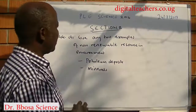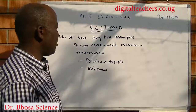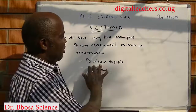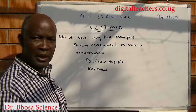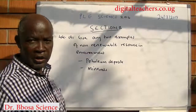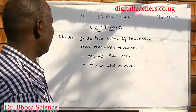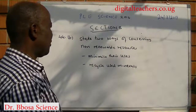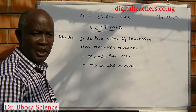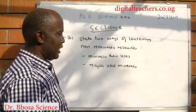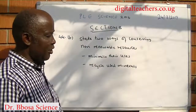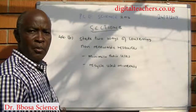Number 44: give any one example of a non-renewable resource in the environment. Petroleum deposits, for example those in Bunyoro, and minerals. Ways of conserving non-renewable resources: by economizing or minimizing their use, and by recycling minerals.